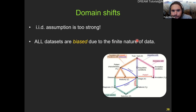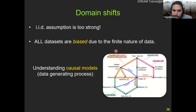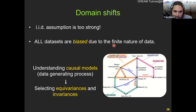Very related to this is the notion of domain shift. The IID — independent and identically distributed — data assumption is too strong. Real datasets are always biased because they are finite — you cannot have images sampled from every single hospital in the world. The conclusion is that understanding causal models and the data generation process allows us to select the important equivariances and invariances. Most successful machine learning engineers and scientists are very good at understanding this and selecting the biases in their data to achieve better results.